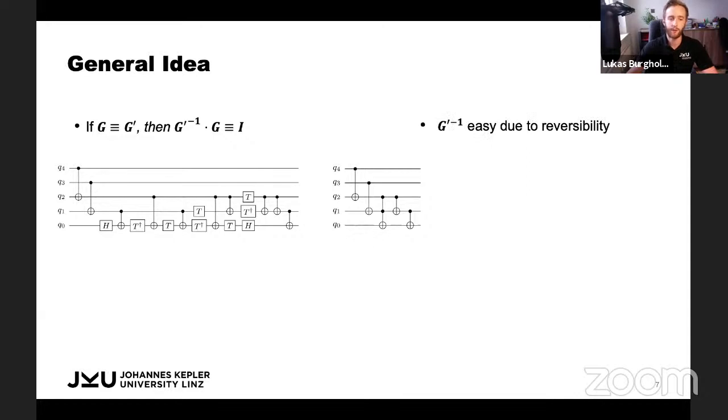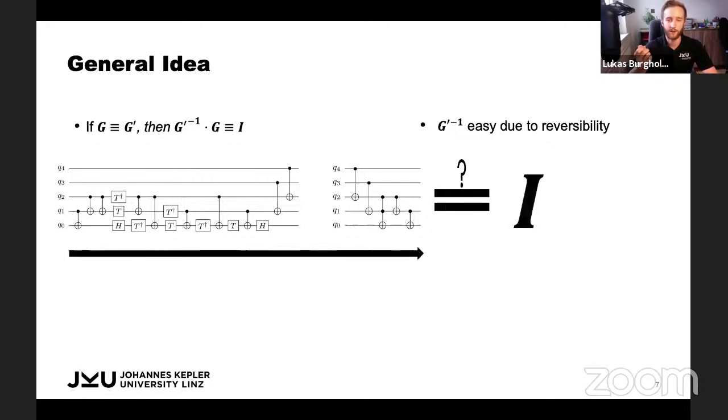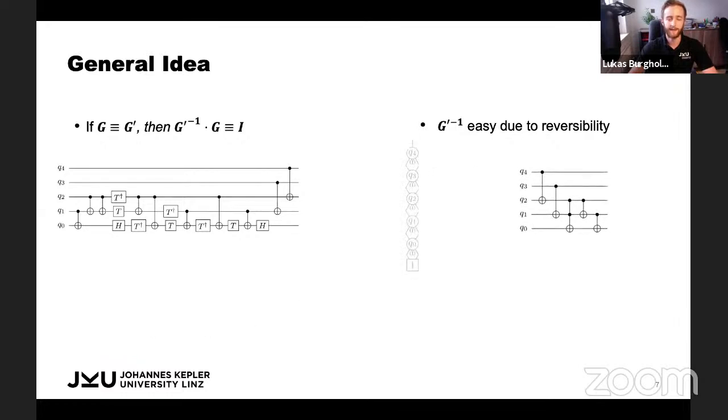If we consider the circuits from before, we first need to calculate the inverse. But the inverse is easy because we can just flip around the order of gates and invert each single gate because all of the gates are reversible. Then we could proceed in a left to right fashion, multiply all the matrices and ask ourselves, is this the identity? But we're still not quite there because the first sequence of gates constructs the whole decision diagram for the inverse of G prime.